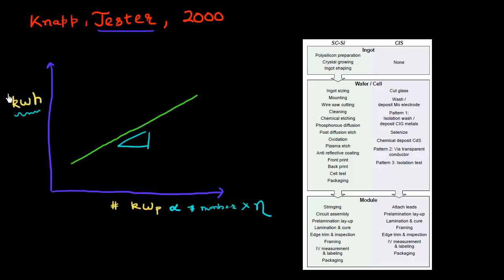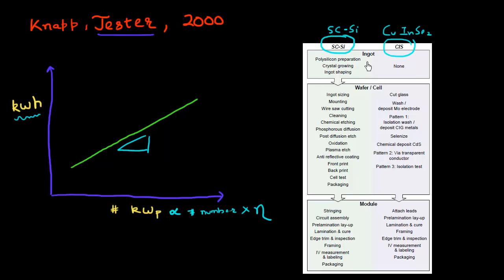They did this analysis for the amount of gases consumed and the amount of different materials consumed, comparing a single crystalline silicon based process with a CIS — copper indium diselenide — thin film process, as Siemens also had a line for making thin film solar cells out of CIS at the time. One thing which immediately jumps out when you compare these two process flows is how simple the process flow for making a thin film based solar cell is.